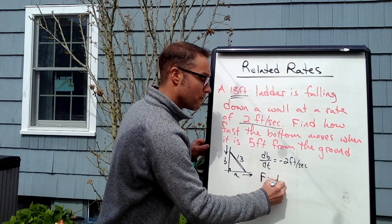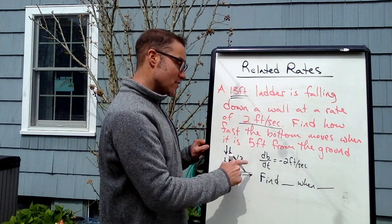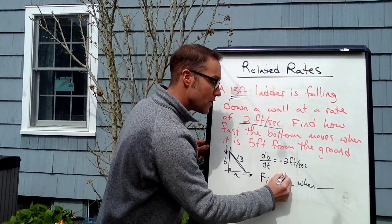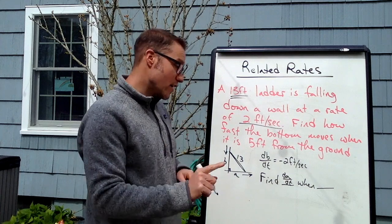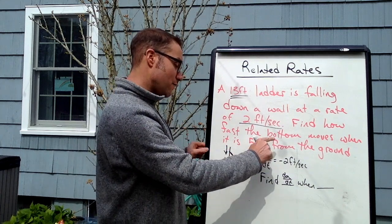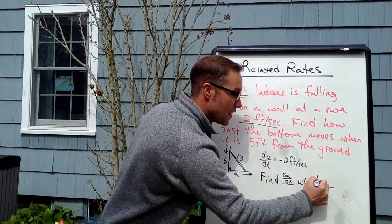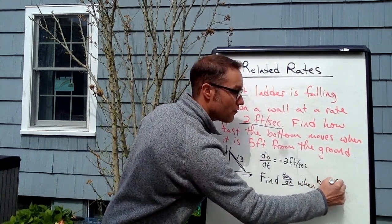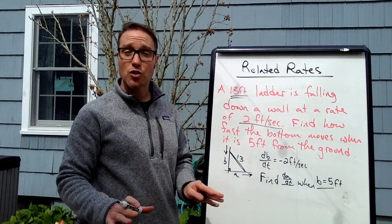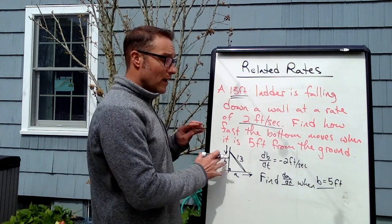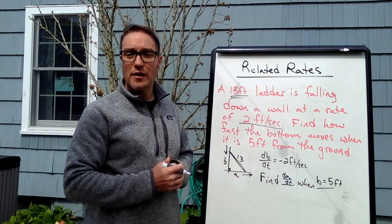Here's my template: find blank when blank. Find how fast the bottom moves — they want me to find the rate of change of A, dA/dt. They want that when it is 5 feet from the ground — so when B equals 5 feet. This takes some practice; I've done a million of these, so if you haven't, that process might take a little longer, but practice will pay off.